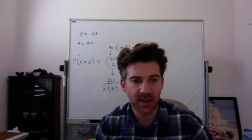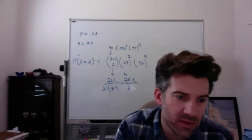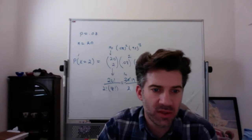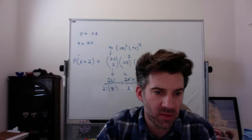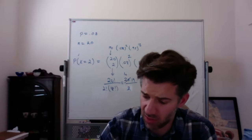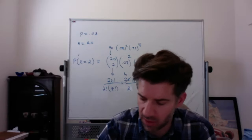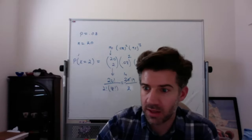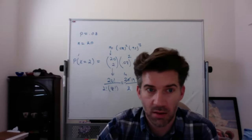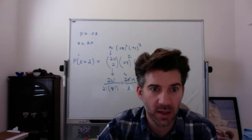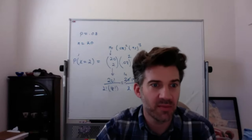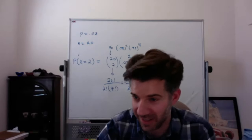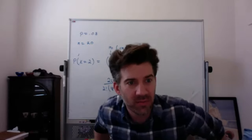Last checkpoint question: the US cesarean birth rate in 2013 was about 33%. A random sample of 200 births is selected. For X = number of cesarean births, the parameters are n=200 and p=0.33.